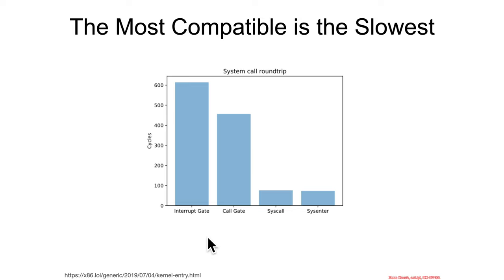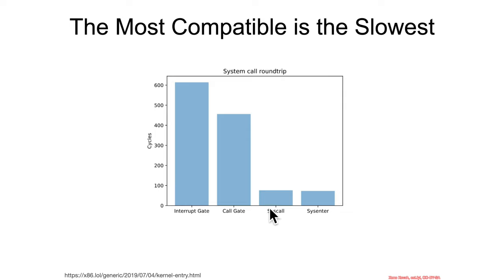An interesting data point: performance-wise, an interrupt gate is the most compatible option but also the slowest — on the order of 600 cycles for some particular hardware. A call gate is not as bad, but still pretty slow in comparison to the syscall and sysenter instructions. That's why wherever possible — wherever the hardware supports it and wherever the OS mode (32 or 64-bit) supports it — operating systems will generally try to use syscall or sysenter.